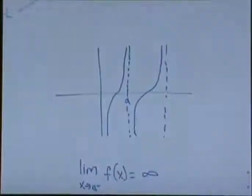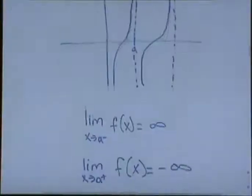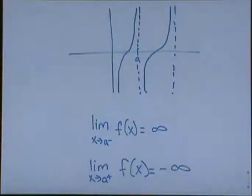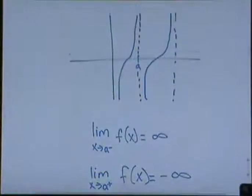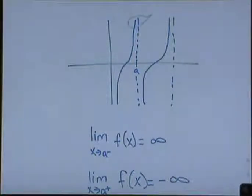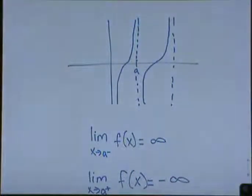So in this function, the limit as x approaches a of f of x does not exist, because it approaches two different values. From the negative side it approaches infinity, and from the positive side it approaches negative infinity.